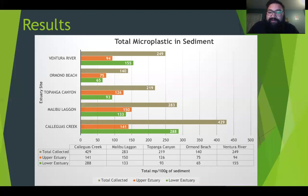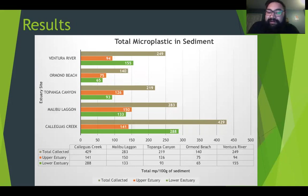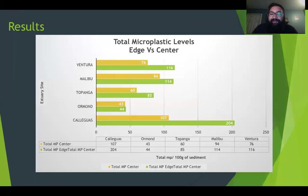At first glance of the results, we can see that the highest amounts of microplastics were concentrated along the Calleguas Creek estuary system, with a total of 429 microplastic debris collected. We can also observe that the highest concentration within Calleguas Creek was in the lower portion estuary, containing a total of 288 microplastic debris. The lowest-performing site, which was somewhat expected based on the area's history, was Ormond Beach, with a total of 140 microplastic particles collected, with 93 particles observed in the lower estuary. The Ventura River saw a total of 249 microplastics, Topanga Canyon saw 219, and Malibu Lagoon saw a total of 283 microplastics.